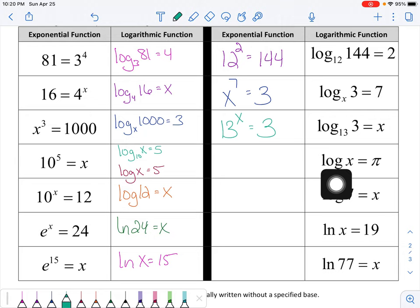Now you'll notice this one doesn't have a base, right? There's no base written here. So we're going to assume a base 10. So 10 to the number pi. Yes, pi is just a number, is equal to x.